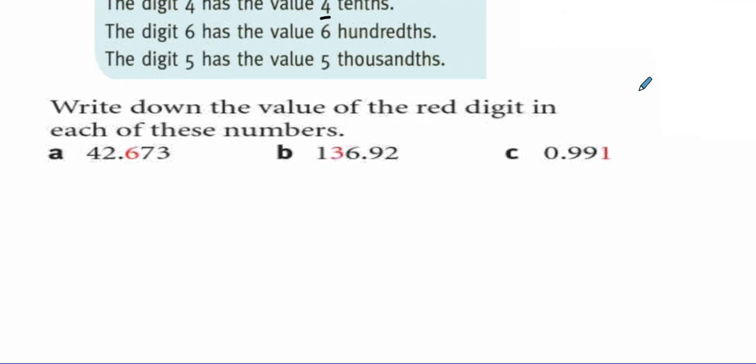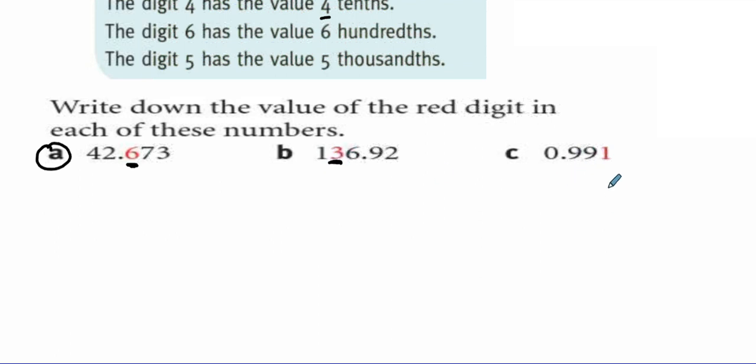Question number two: write down the value of the red digit in each of these numbers. On the worksheets you may notice there is no red color, so you may use the concept of underlining. The red digit in part A is six, so you can underline digit six. In B the red digit is three, and here the red digit is one.